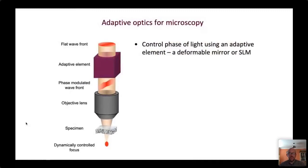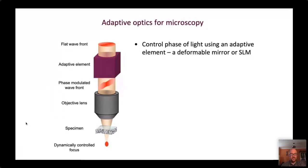The principle of adaptive optics is that we include an adaptive optical element in the microscope to control the phase of the light. Taking a laser scanning microscope as an example, the laser beam is passed through an objective lens and scanned around the focus inside the specimen. The specimen, because it has variations in refractive index, introduces phase aberrations, so we use the adaptive element to pre-modulate the wavefront to cancel out whatever distortion is introduced. A similar argument applies to the imaging path as well.